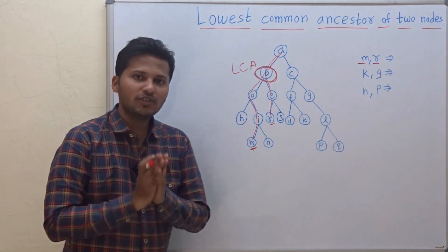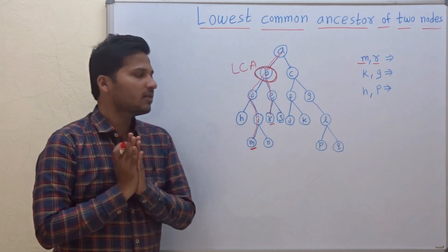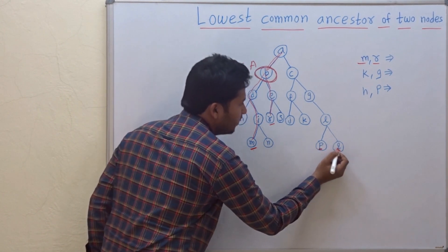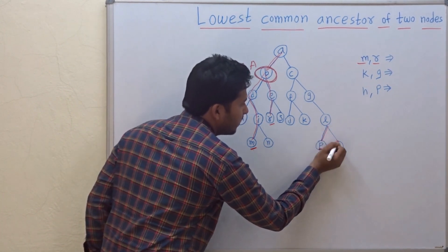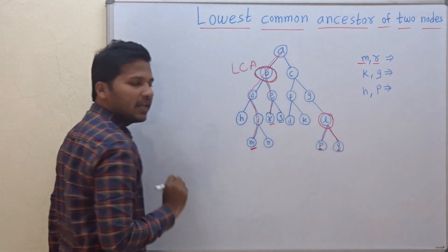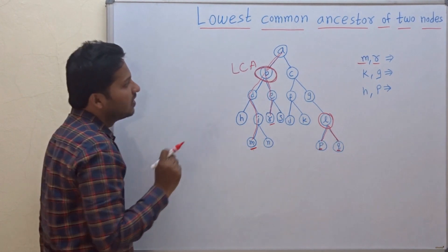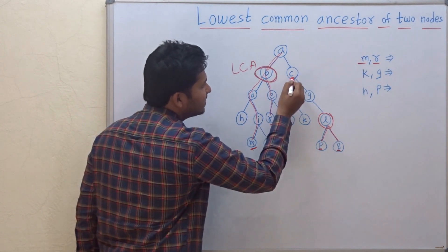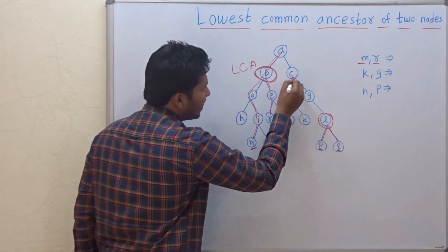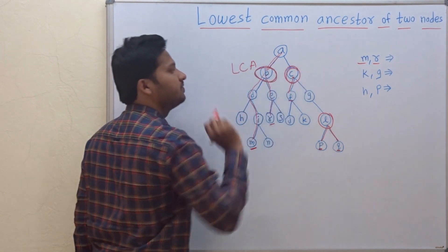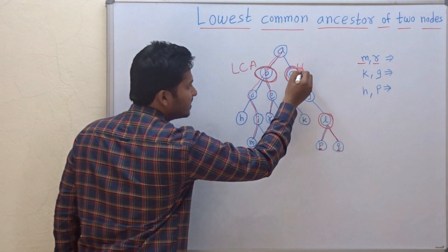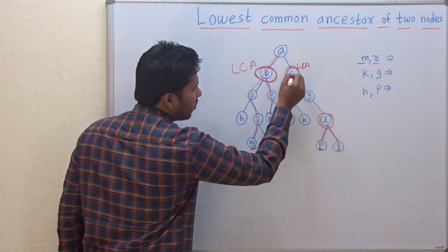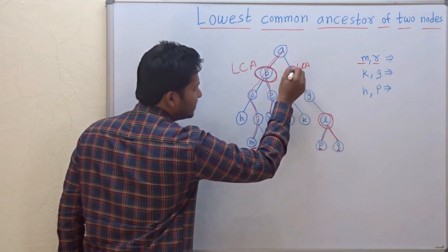This is how we find out the lowest common ancestor. Let's take some more examples. If you want to find out the lowest common ancestor between P and Q, obviously it is L. L is the lowest common ancestor of P and Q. Now if you want to find out the lowest common ancestor between F and C, then that lowest common ancestor is C itself.